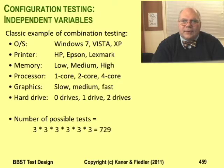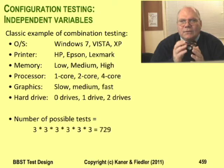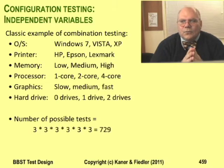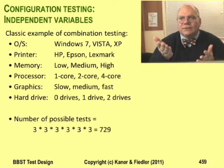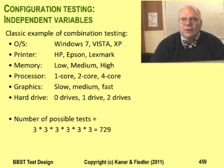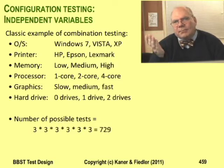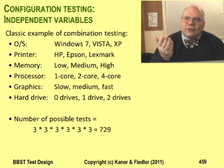Let's work another example. Configuration testing is one of the best examples of the usefulness of all singles and all pairs testing. What you're testing is the compatibility of your program with the combinations of these different devices. Here are six variables: what type of operating system, what type of printer, how much memory, what processor, what graphic speed, and how many hard drives.